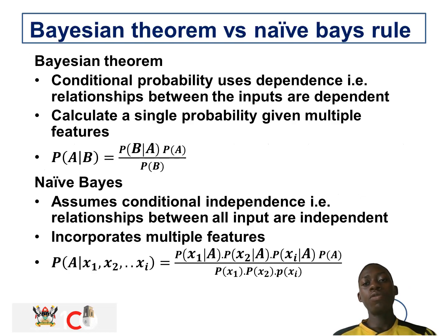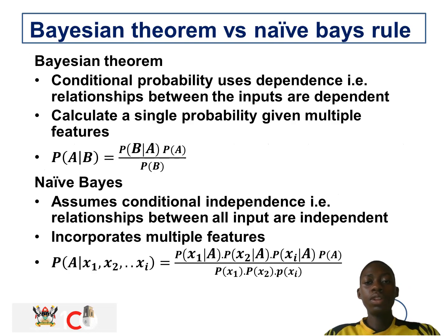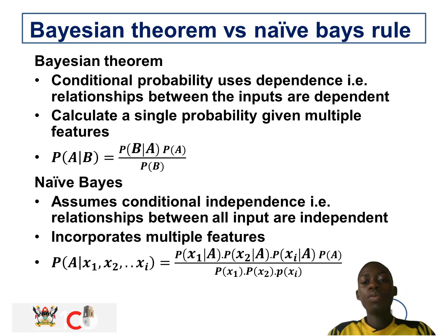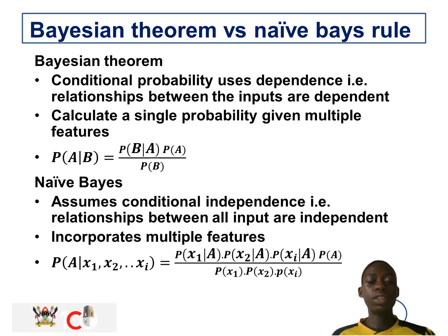Bayes' theorem is different from Naive Bayes, and these are some of the differences between them. Bayes' theorem uses conditional probability where relationships between inputs are dependent, and is used to calculate a single probability given multiple features. Naive Bayes assumes conditional independence — relationships between all inputs are independent — and incorporates multiple features, giving it its unique formula for handling multiple independent features.